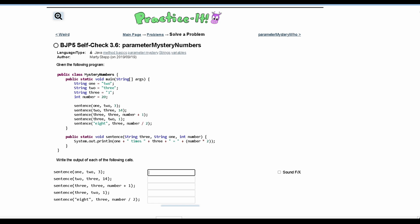For practice self-check 3.6 parameter mystery numbers, we are given the following program and we need to check the output for each of the calls. These are the calls we're going to be looking at.